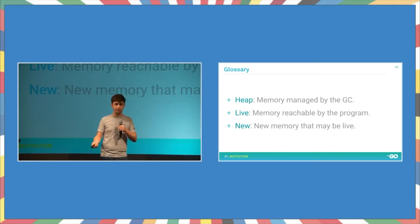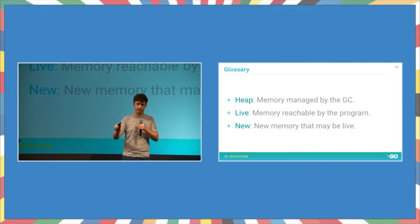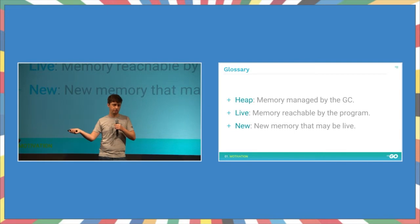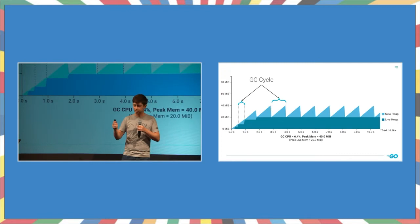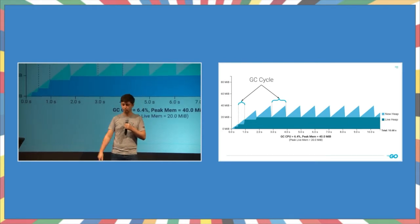So that's what the heap is. I'm going to be referring to the heap a lot. Live heap memory is what the garbage collector does work to discover what memory is actually still in use by the Go application. And new memory is memory that's been allocated that the GC has not had a chance to look at yet. So it may or may not be live, and the GC will discover that when it actually runs. So that was all a lot of words. Let's put that into a graph.